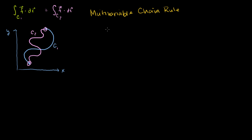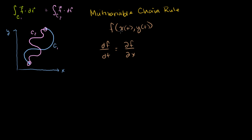The multivariable chain rule says: if I have some function f of x and y, but x and y are themselves functions of a third variable t — so f of x(t) and y(t) — then the derivative of f with respect to t is equal to the partial of f with respect to x times dx/dt, plus the partial of f with respect to y times dy/dt.